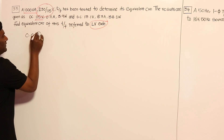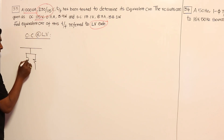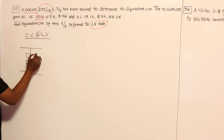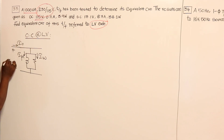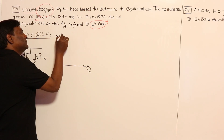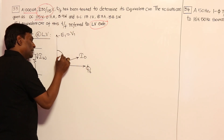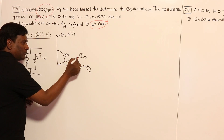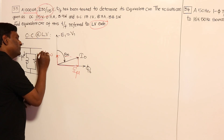In the OC test we have voltage reading, ammeter reading, and wattmeter reading. For the shunt branch: current flowing through the core loss resistance is Iw, current flowing through the magnetizing reactance is Imu, and the total no-load current is I0. The input voltage is V1 and wattmeter input is W0. In the phasor diagram, the operating flux is shown, with minus E1 equal to V1. The angle between I0 and V1 is theta-naught.